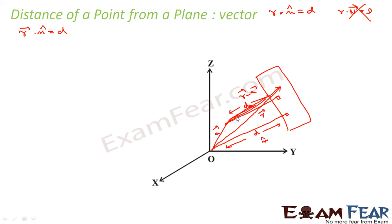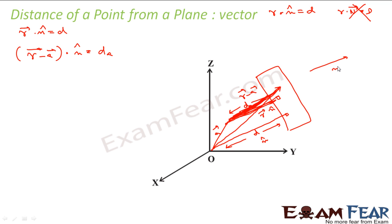This guy is A, this guy is r. So this vector — the one I'm joining now — is nothing but r minus a. So if my direction is n̂, this direction is also n̂ — please note, because both are parallel. So r minus a dot n̂ has to be equal to d_A, the distance I am looking for. This is my n̂, this guy is r minus a. The projection of r minus a on this n̂ direction gives d_A.